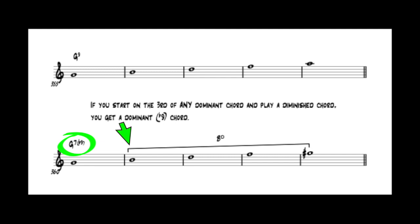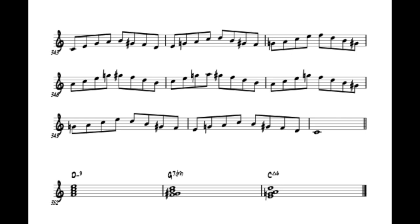In this case we're starting on the third of G7 and playing a diminished chord, and it gives us a G7 flat 9. Here is the way I might play a 2-5-1 on the piano. You can see the notes in the G7 flat 9 in beats 3 and 4 of any of these bars in different inversions.